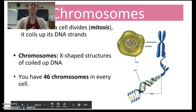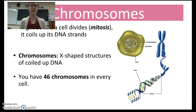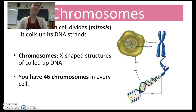Next we have chromosomes, which you should already know about. Right before a cell divides in mitosis, it coils up its DNA strands, and these coils are called chromosomes. As a reminder, a chromosome is just an X-shaped structure of DNA. In every single cell that you have, you have 46 chromosomes.